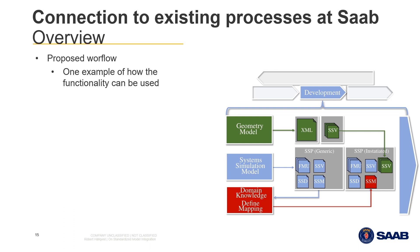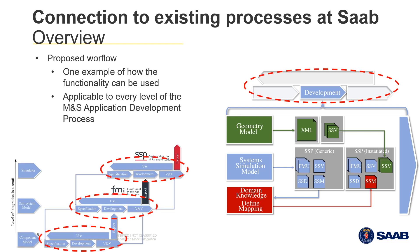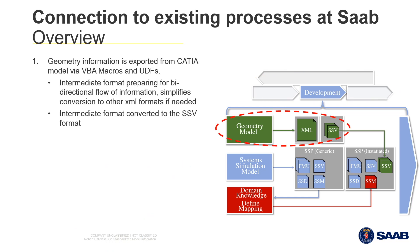In this figure, you can see a proposed workflow of how the SSP and FMI standards can be used to achieve interoperability between geometry modeling and system simulation. This workflow is a refinement of the development activity of the previously mentioned handbook, and therefore provides a connection to the existing processes at Saab. The geometry information is exported from CATIA via a set of developed Visual Basic for Applications macros, first to an intermediate XML format. An intermediate format is used to enable future bidirectional flow of information, to simplify conversion to other domain-specific XML formats, and to allow for system-specific aggregation. This intermediate format is then converted to the SSV format.